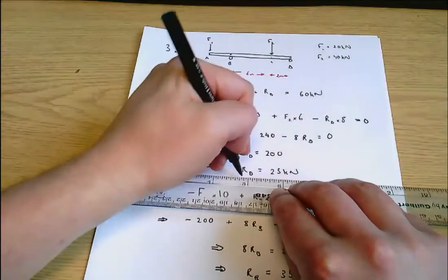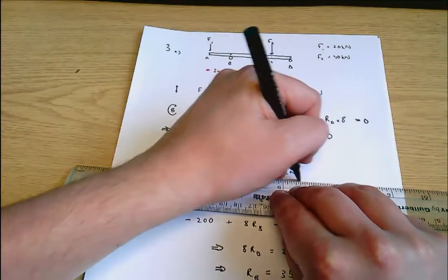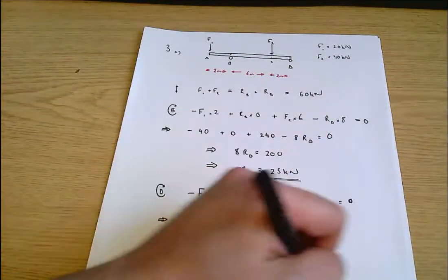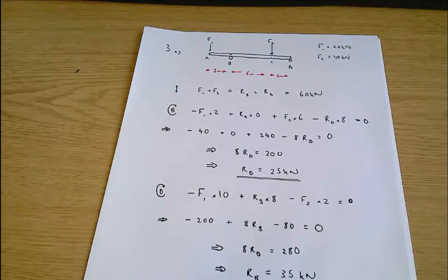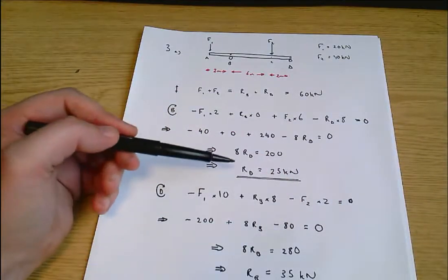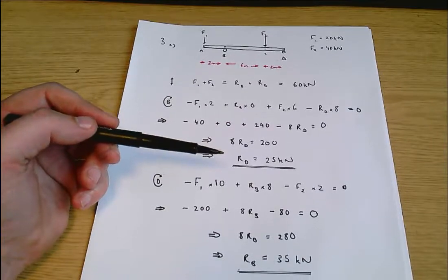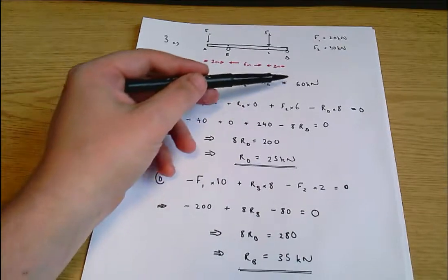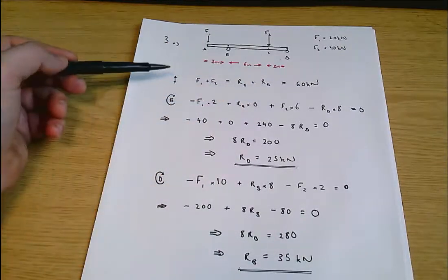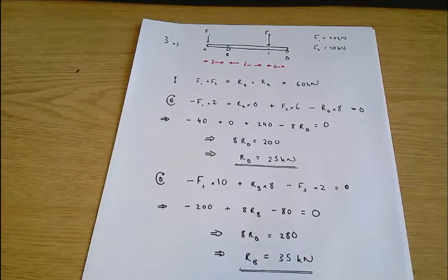So those are our two answers. The reaction at D is 25 kilonewtons and the reaction at B is 35 kilonewtons. I can check and say, okay, do they both add up to 60? Because that's what they need to do to give us vertical equilibrium. And the answer is yes, they do. So that's 3A done.